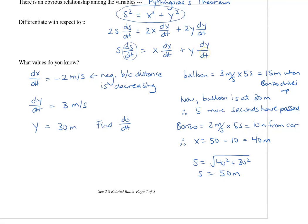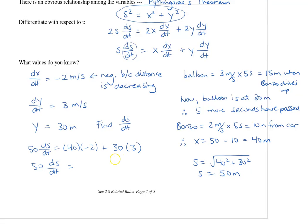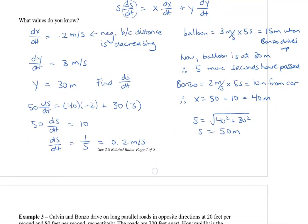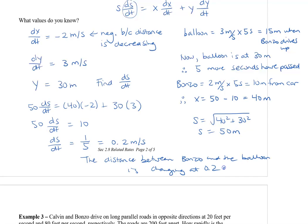Substituting in: 50 times ds/dt equals 40 times negative 2 plus 30 times 3. The right-hand side gives us 10, so 50 times ds/dt equals 10, meaning ds/dt equals 1/5, or 0.2 meters per second. That makes sense — the balloon is actually moving further away from Bonzo as it rises. So the distance between Bonzo and the balloon is changing at 0.2 meters per second.